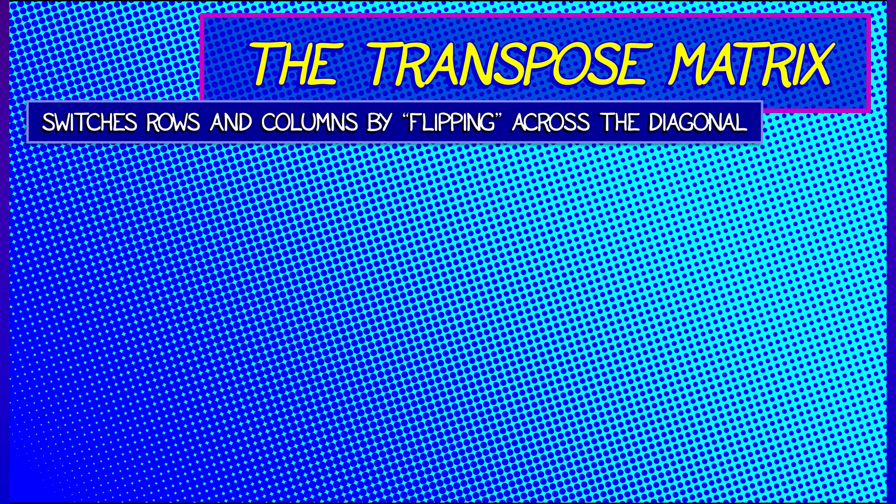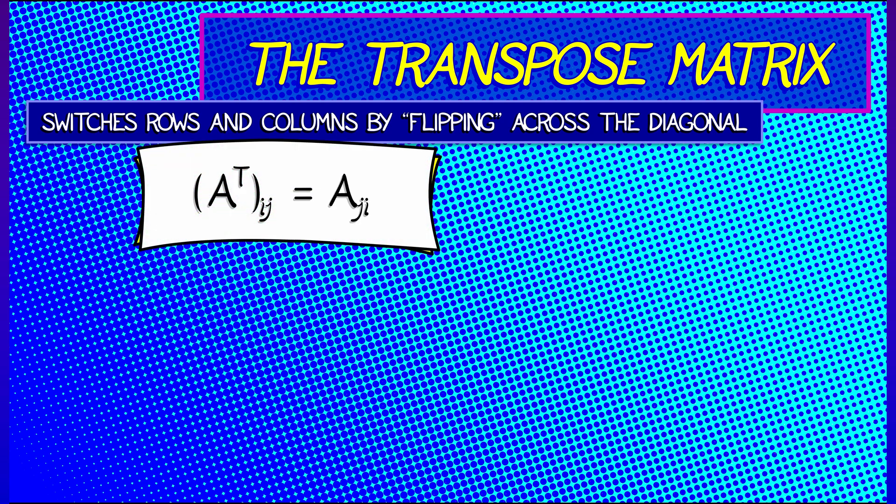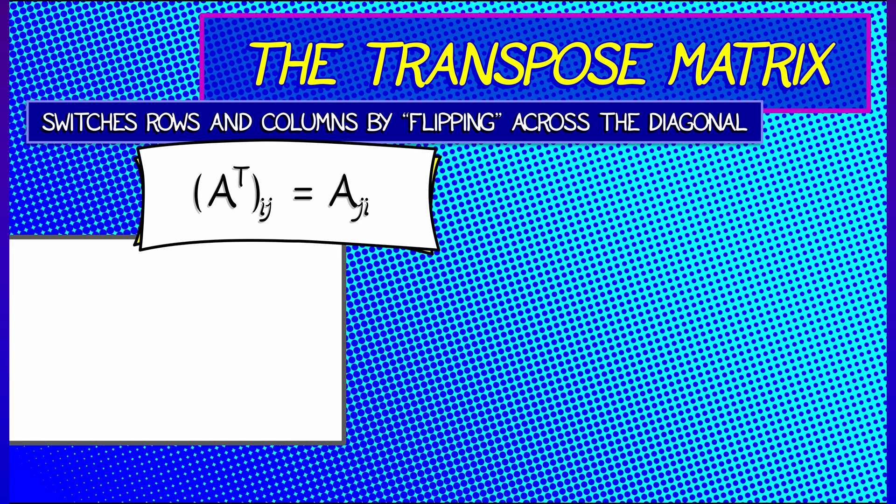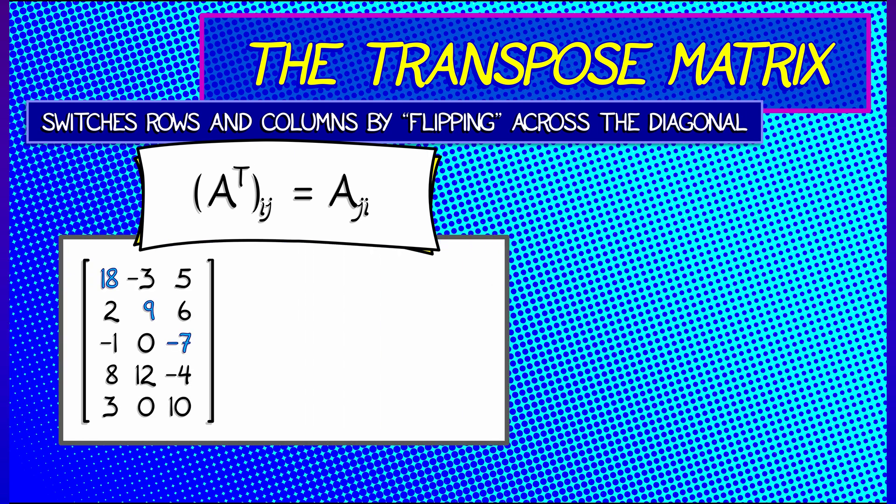You reverse the rows and the columns by flipping across the diagonal. More technically, given a matrix A, its transpose is denoted A^T, and the i,jth entry of the transpose is the j,ith entry of the original matrix you started with.